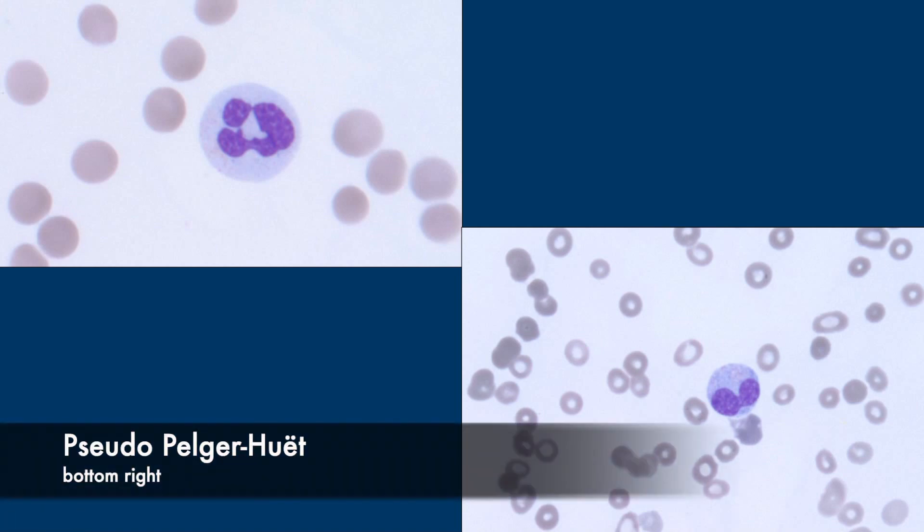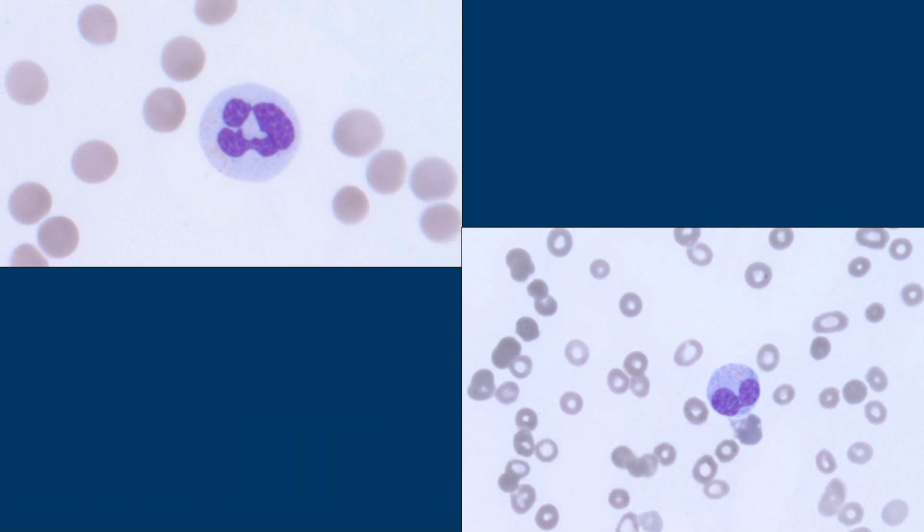Oh, I remember hearing about that a long time ago. So this is important for test purposes. Pelger-Hewitt anomaly is supposedly the most common neutrophil anomaly. I've never seen it in real life — I've never seen real Pelger-Hewitt disease.